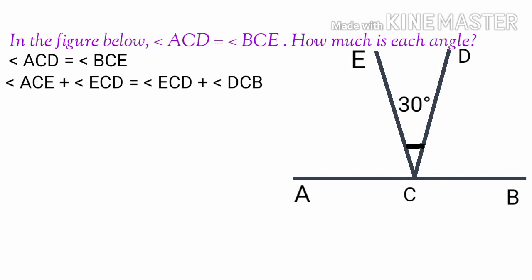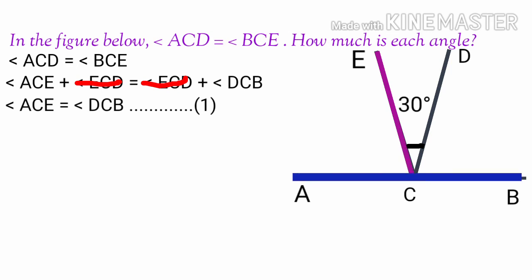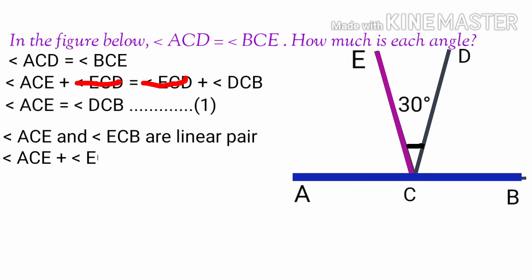Angle ACE plus angle ECD is equal to angle ECD plus angle DCB. Since angle ECD appears on both sides, we can cancel it. Therefore, angle ACE is equal to angle DCB — this is equation 1. EC is a line drawn to line AB, so angle ACE and angle ECB are a linear pair. Therefore, angle ACE plus angle ECB is equal to 180 degrees.